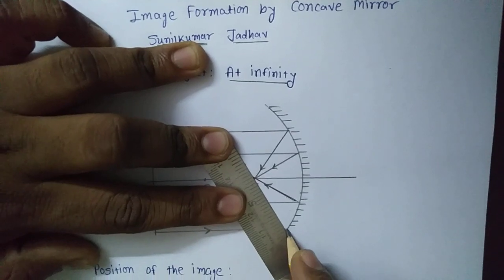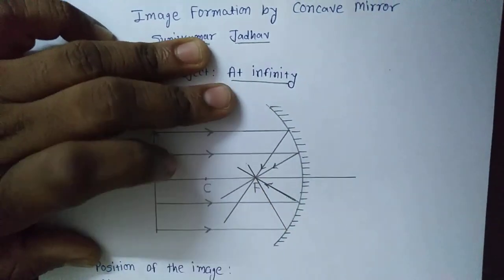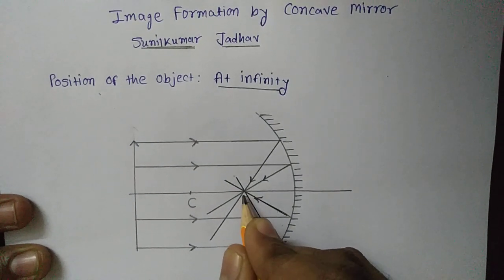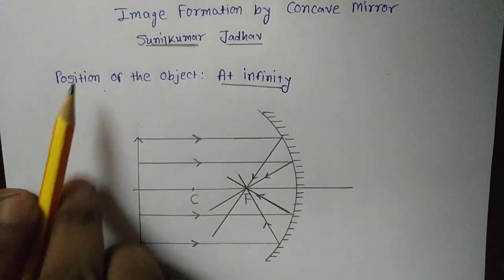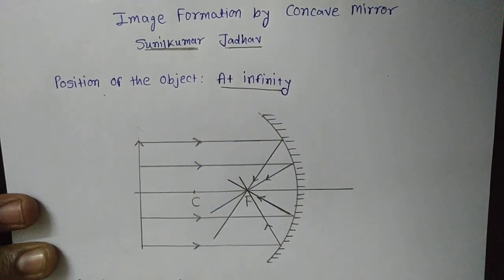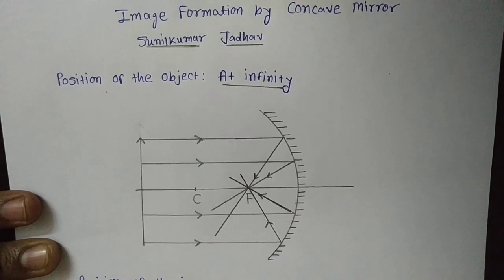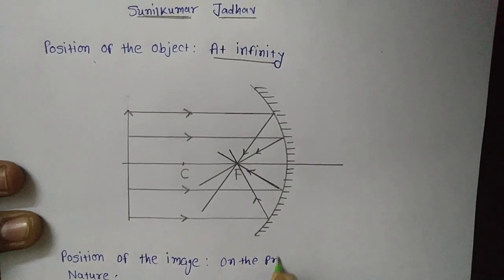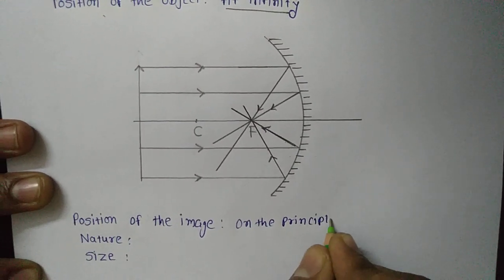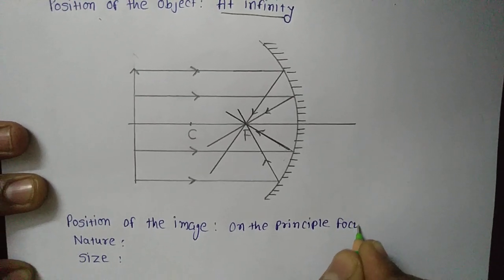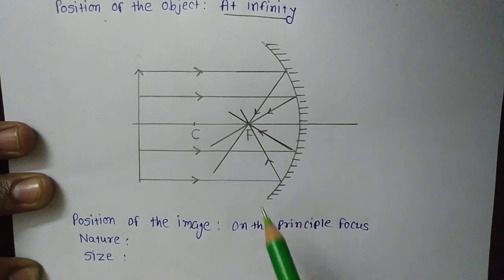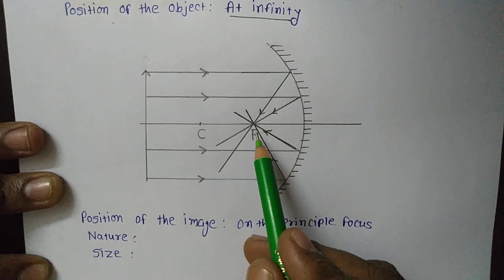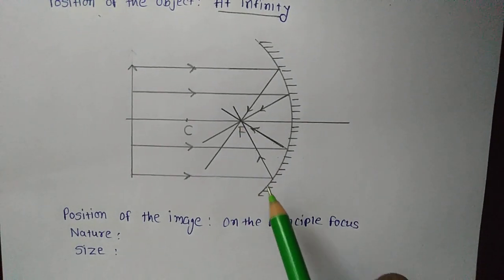So if we keep the object at infinity, all the rays are passing through principal focus F — that means the image is formed on the principal focus F. The image forms on the principal focus, which is also lying on the principal axis. So the image will be formed on F, that is on principal focus.